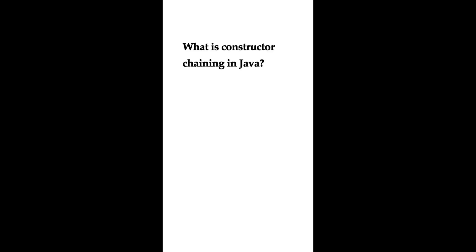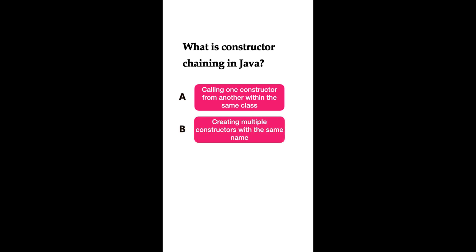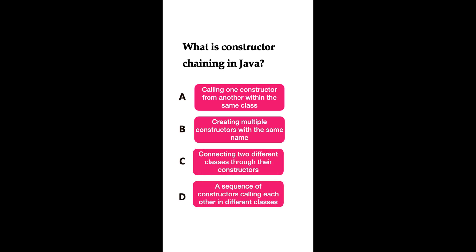Welcome to Java Quiz Series. Here is one more question: What is constructor chaining in Java? Option A: calling one constructor from another within the same class. Option B: creating multiple constructors with the same name. Option C: connecting two different classes through their constructors. Option D: a sequence of constructors calling each other in different classes. You have five seconds to answer.